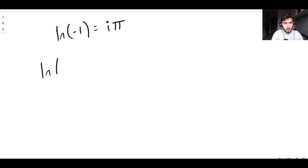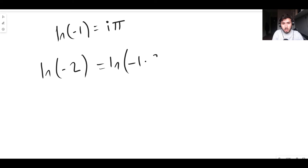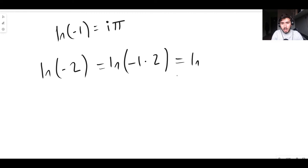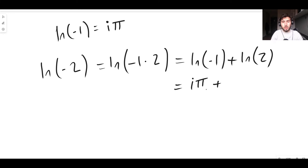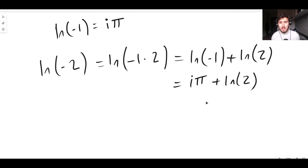For example, let's look at the natural log of minus 2. We use the same approach with a log rule: the natural log of minus 2 is the natural log of minus 1 times 2, because minus 2 equals minus 1 times 2. Using the log product rule, a product inside a logarithm can be split into the sum of two logarithms: natural log of minus 1 plus natural log of 2. We know the natural log of minus 1 is i pi, and the natural log of 2 is just the natural log of 2. So the natural log of minus 2 equals i pi plus the natural log of 2.